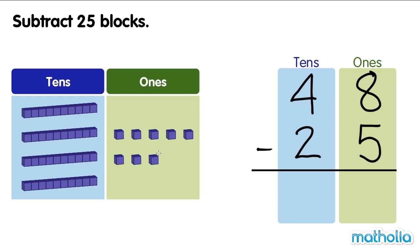Start by subtracting the ones. 8 ones minus 5 ones equals 3 ones.